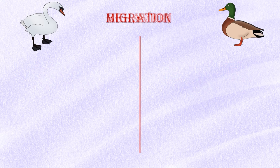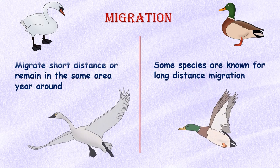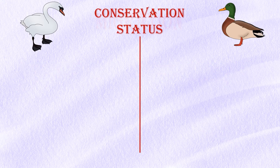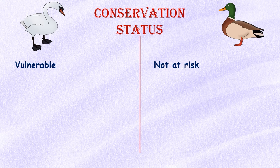Migration: Some species of ducks are known for their long-distance migration, while swans typically migrate shorter distances or remain in the same area year-round. Conservation status: Swans are classified as a vulnerable species on the IUCN Red List. Some species of swans, such as the trumpeter swan, are considered endangered or threatened, while most species of ducks are not currently at risk of extinction.